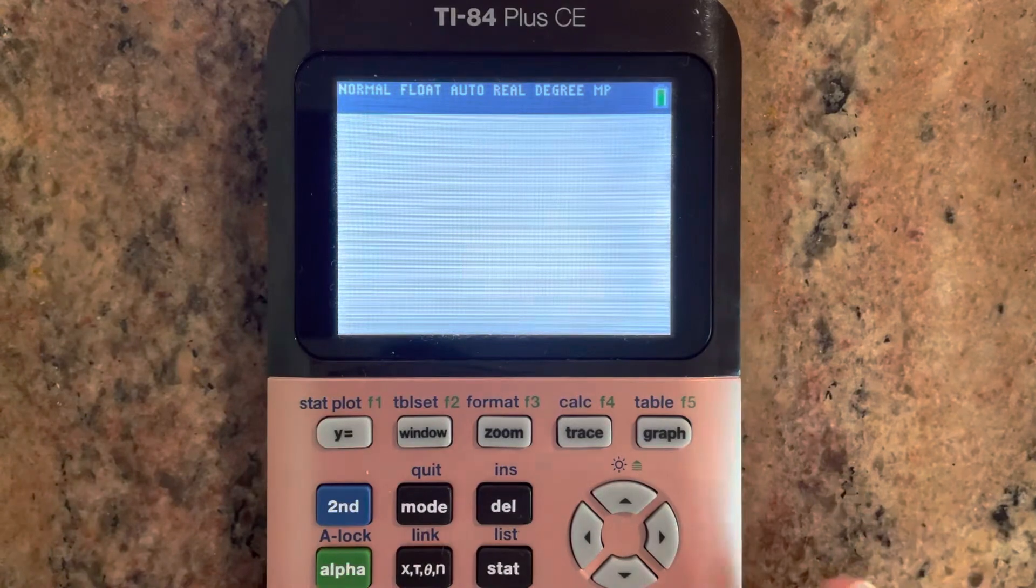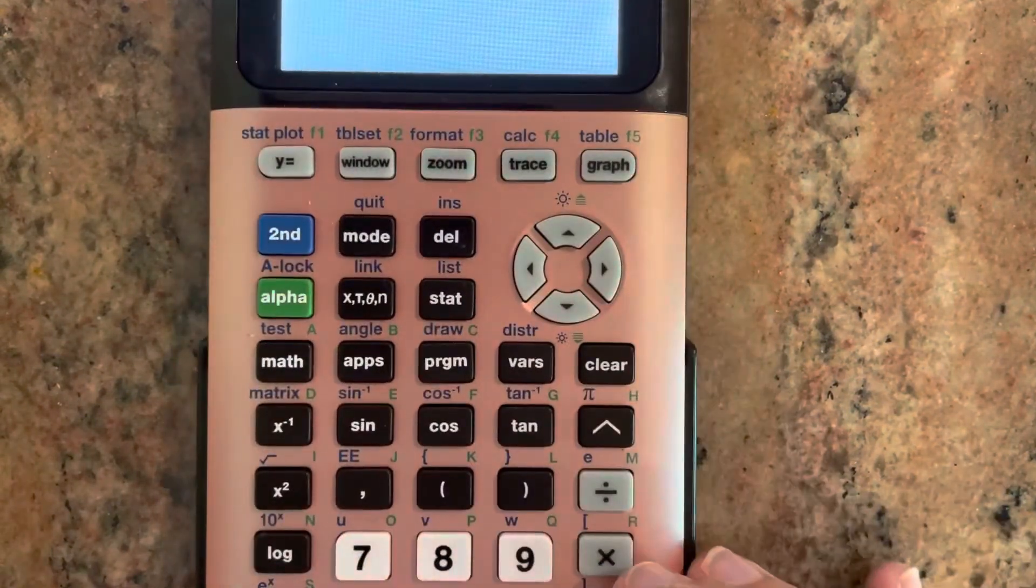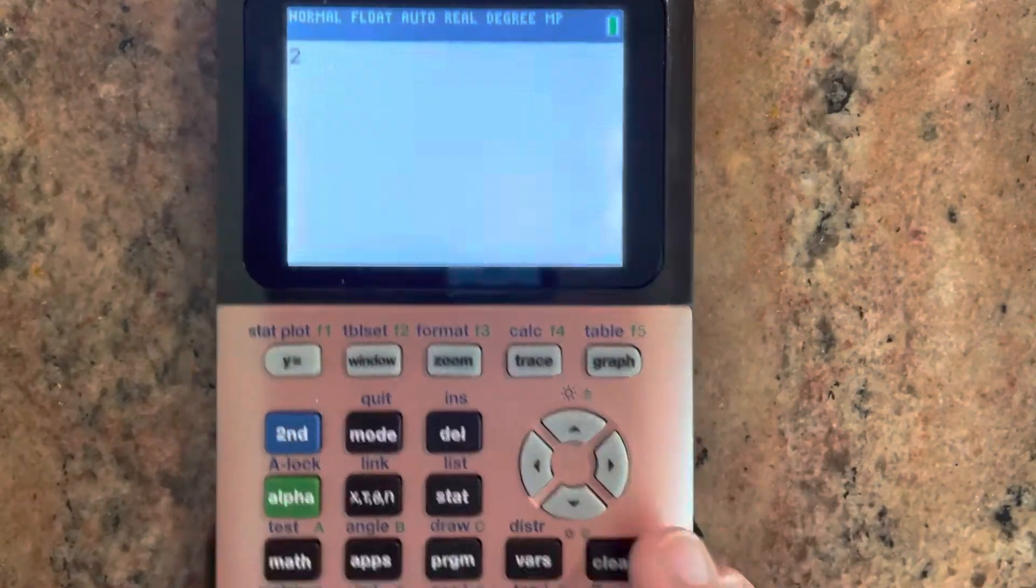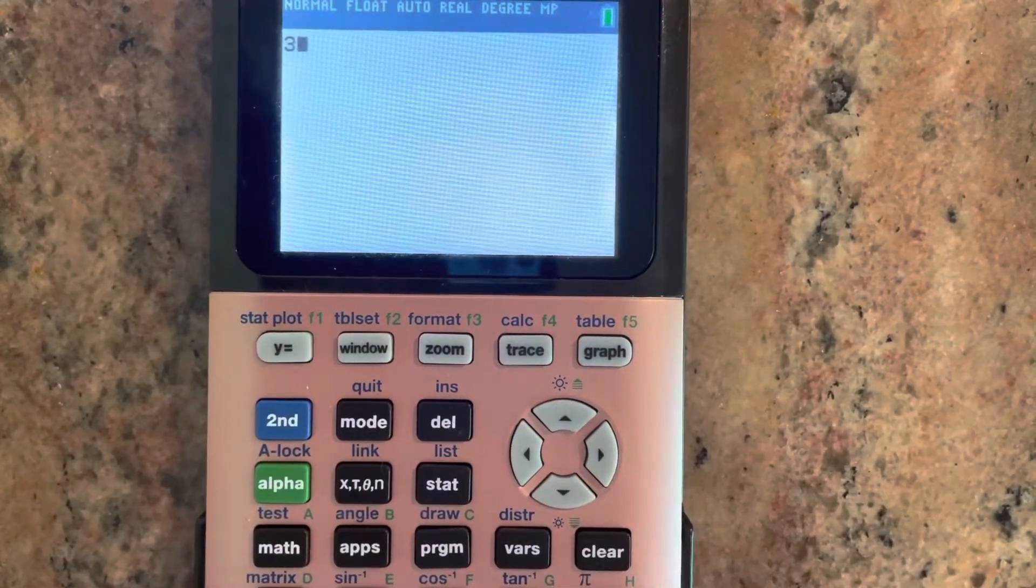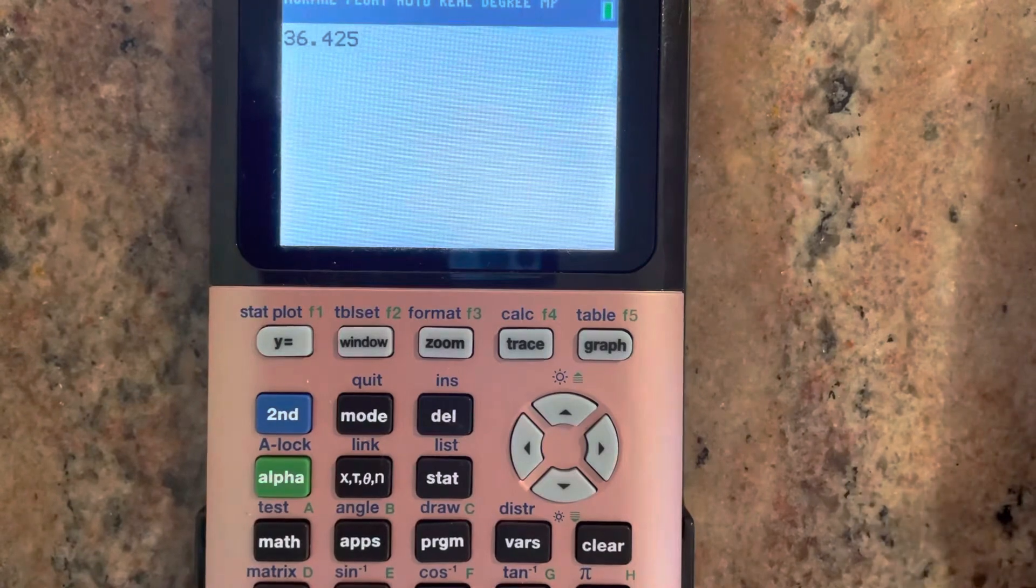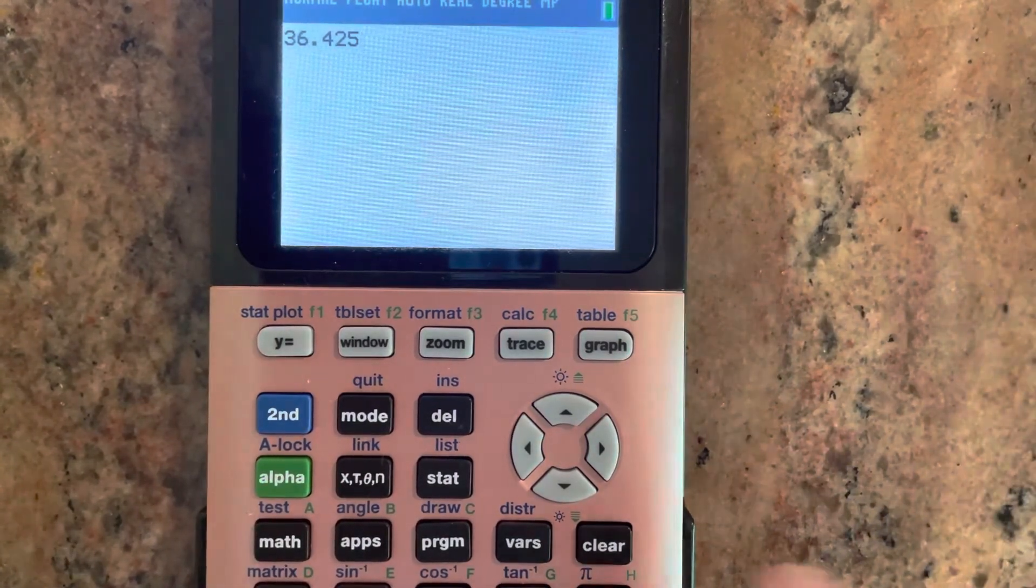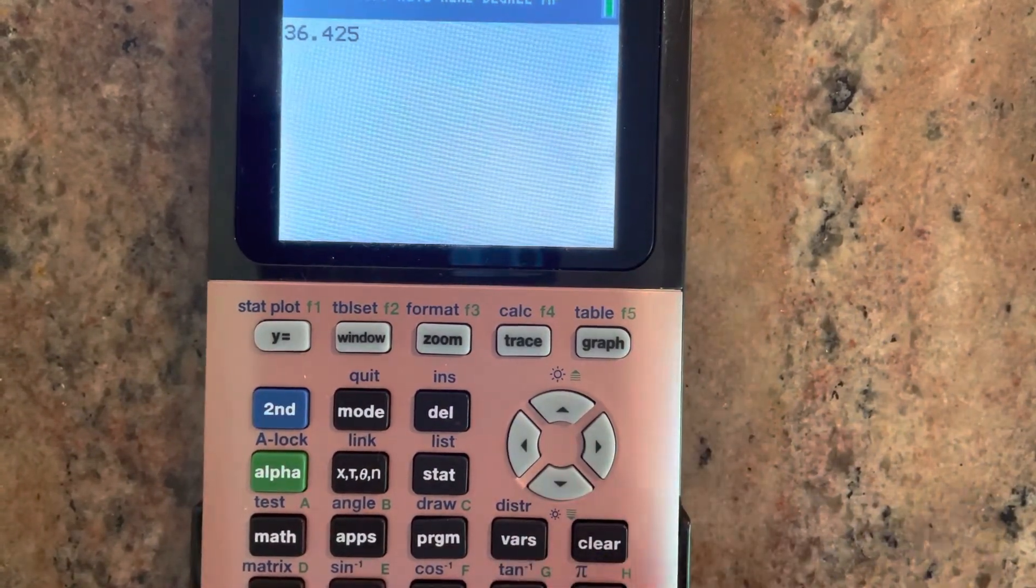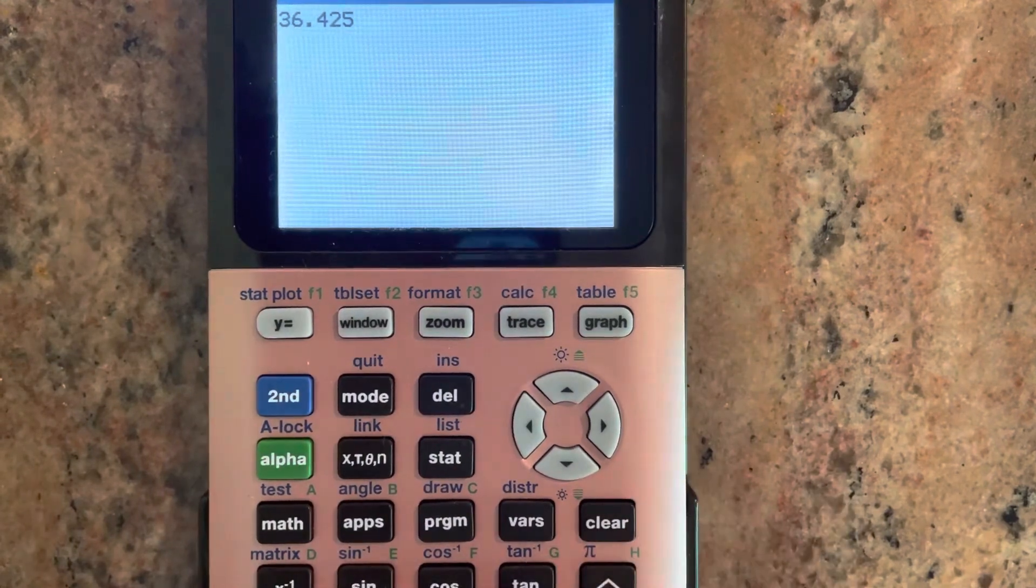Okay, so let's say I have 36.425 degrees and I want to turn that decimal notation into degrees, minutes, and seconds.